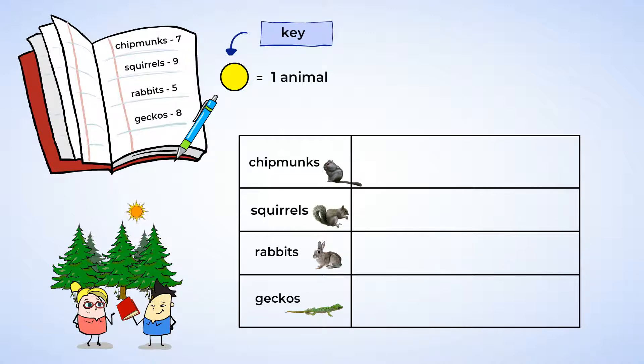Now, we need to put the data in the graph. First, there are seven chipmunks. We can represent that with seven circles. Next is nine squirrels. We can represent that with nine circles. Be sure that you keep the symbols aligned in each row. The number of rabbits is five, so we can show that with five circles.